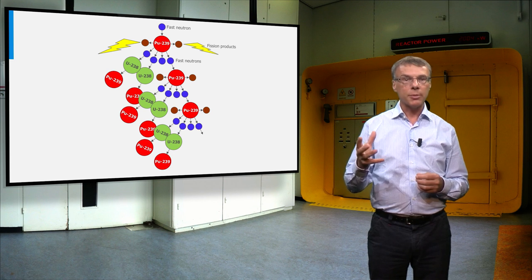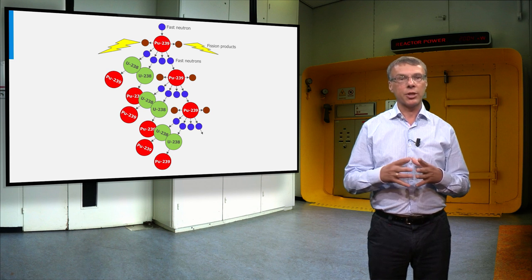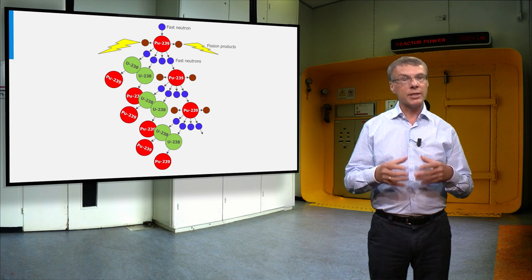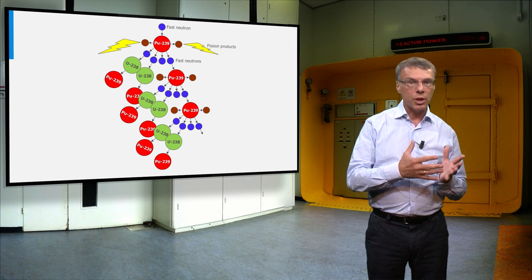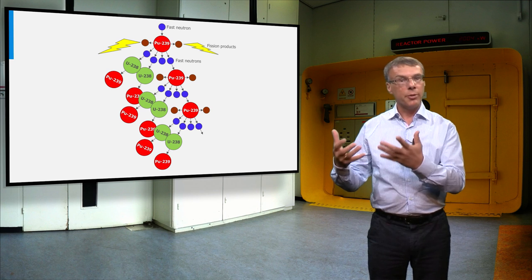The concept of a fast breeder reactor is illustrated in this figure. In each fission event we produce so many neutrons that we convert more uranium-238 into plutonium than we consume.